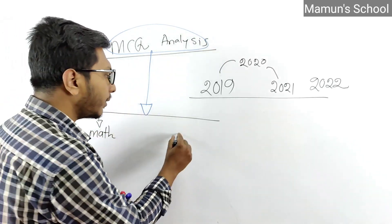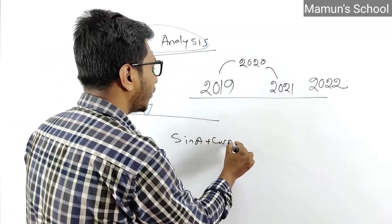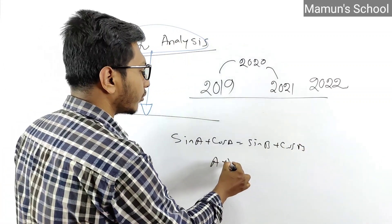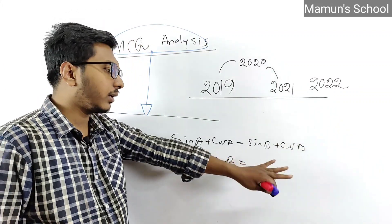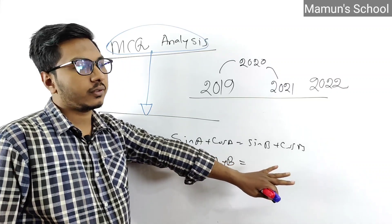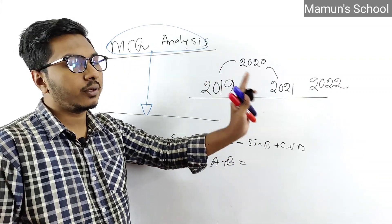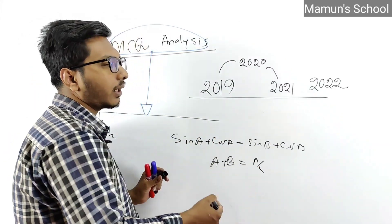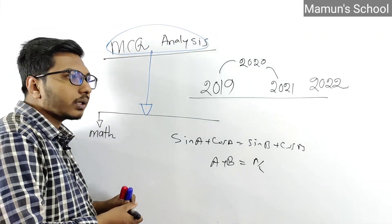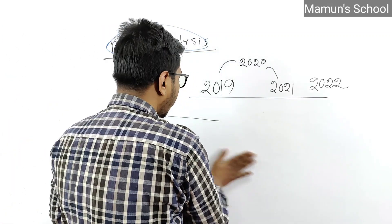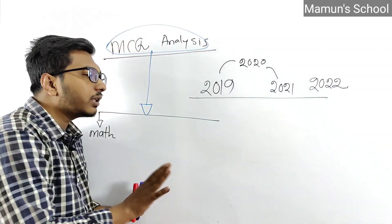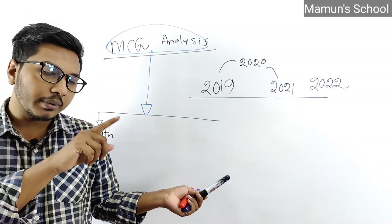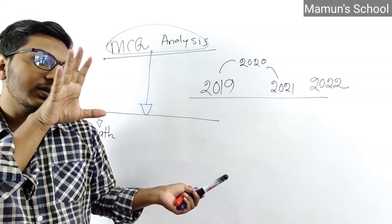When they repeat questions, the formula might change slightly. For example, sin A + cos A = sin B + cos B becomes A + B. If you never learned the basic formula and only memorized shortcuts, you won't be able to solve variations. Universities test the same concepts in different ways.